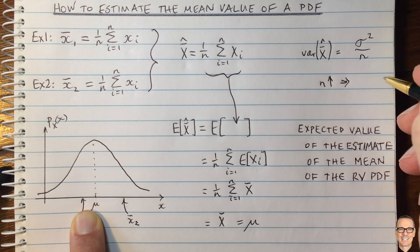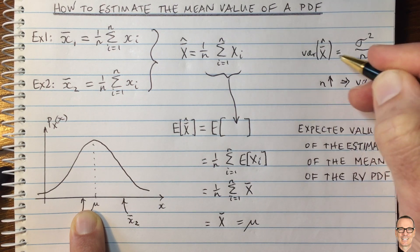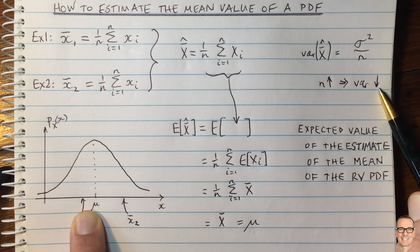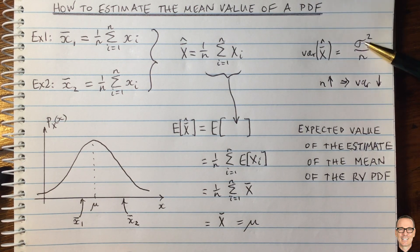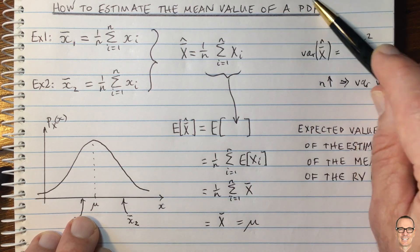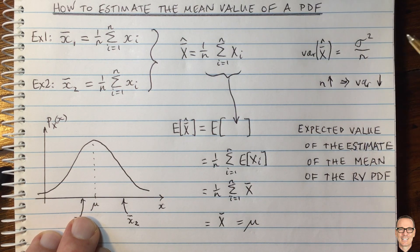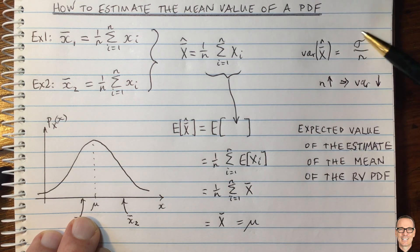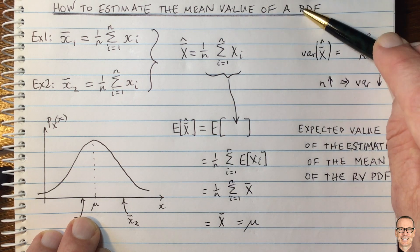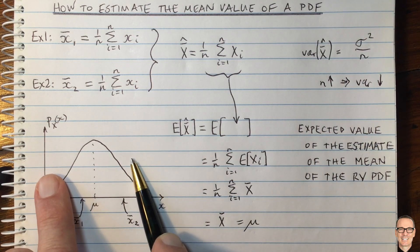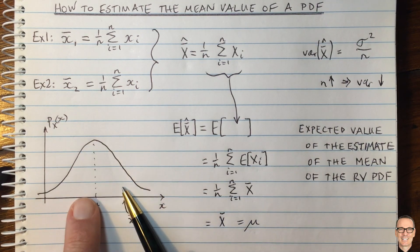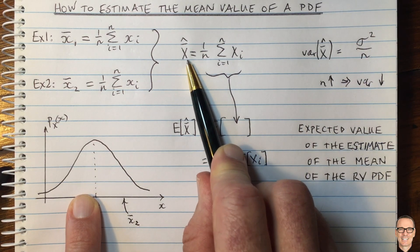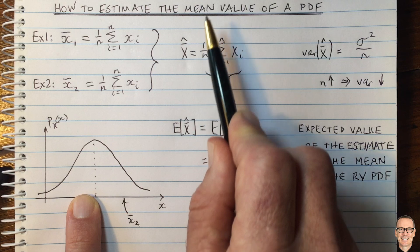this implies the variance of the estimate goes down, which is what you'd like to have. It becomes more accurate. Another thing we see is that if the random variable itself, the original random variable, has a small variance, then you don't need to take so many samples. Because this variance will be small if the variance of the original random variable is small. So in our picture over here, if this distribution is narrow, then you won't need to take so many samples to get the same level of accuracy in your estimate of the mean.